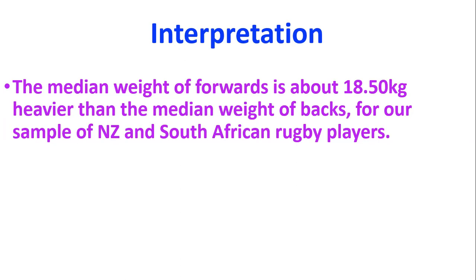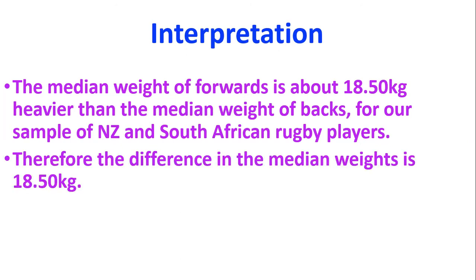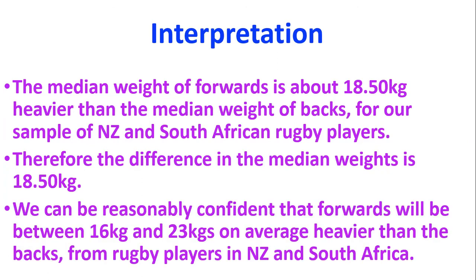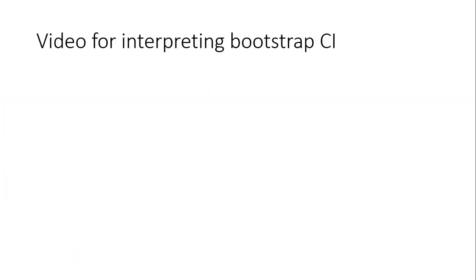And that's what we're going to interpret. The median weight of the forwards is about 18.5 kg heavier than the median weight of the backs for our sample, so the difference in the median weight is 18.5 kg. We can be reasonably confident that forwards will be between 16 and 23 kg heavier than backs. That 'reasonably confident' is a key idea — we're not absolutely certain because we're dealing with sample data, but we can be reasonably confident.